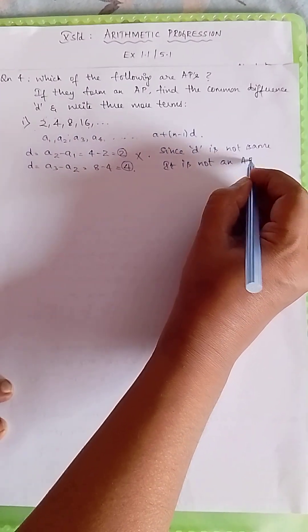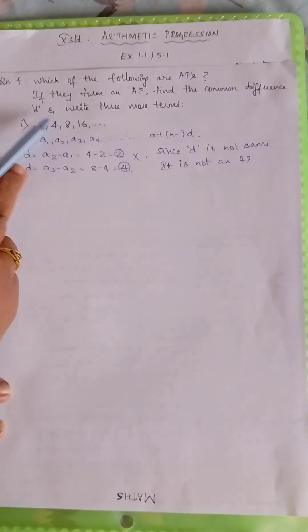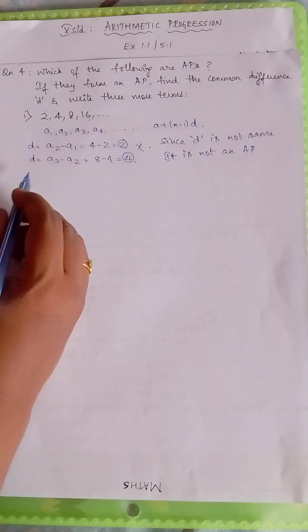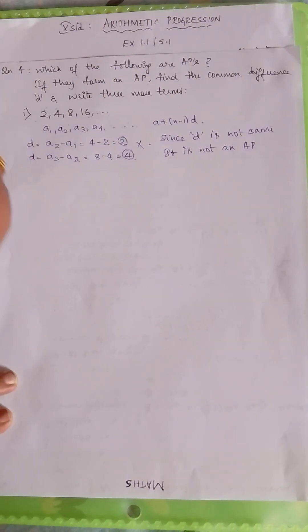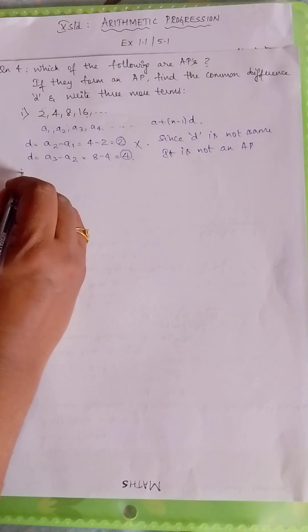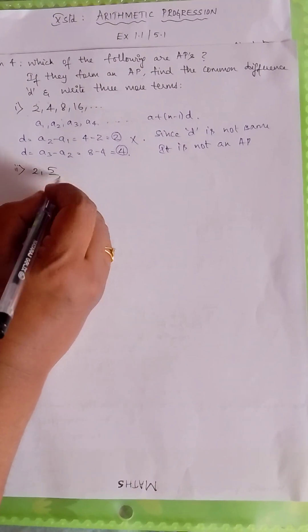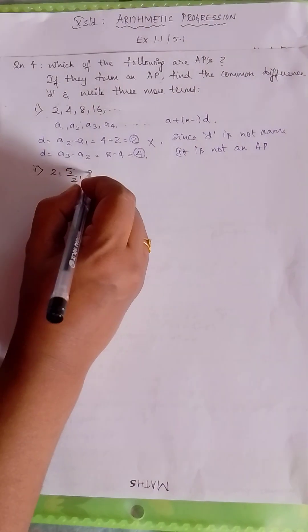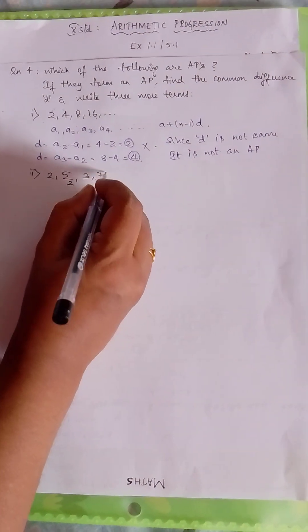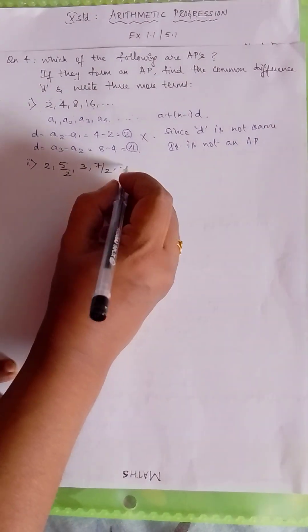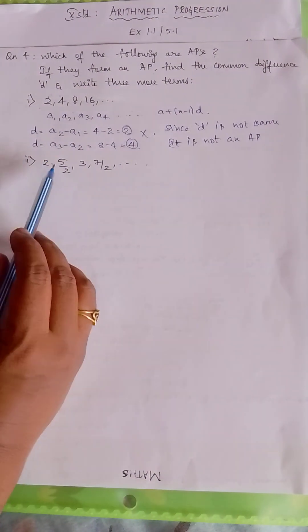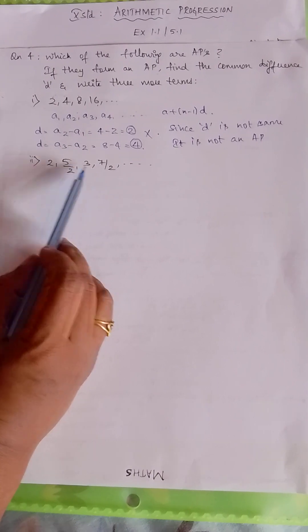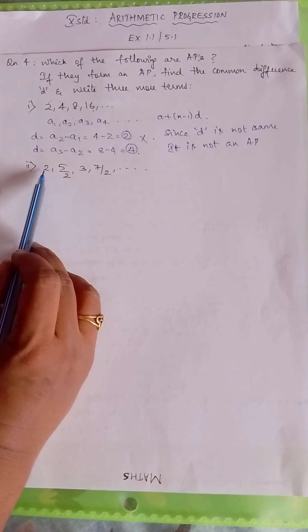If it is an AP only, we will be able to proceed with the other questions. Let us do the second problem. The second problem is given as 2, 5/2, 3, 7/2, and so on. See the series here.